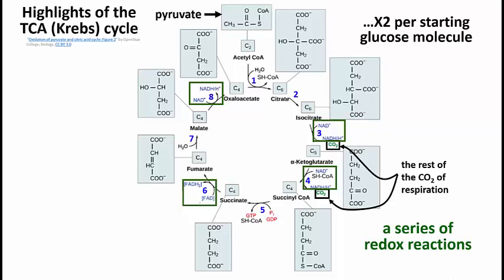There is in step 5 a substrate level phosphorylation. In higher organisms, that results in the production not of ATP, but of GTP. In a subsequent reaction, the GTP transfers its phosphate to ADP to make ATP.